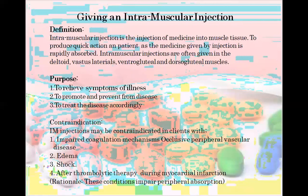Some injections are not given intravenously — for example, anti-malarial drugs are never given intravenously because an oily substance is present in the drug. Intramuscular injections are often given in the deltoid muscle, vastus lateralis, ventrogluteal, or dorsogluteal muscles.